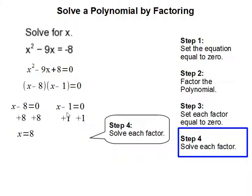And you do the same thing with the other equation. You add 1 on both sides to get rid of the negative 1 here, and x is equal to 1. And this completes our problem.